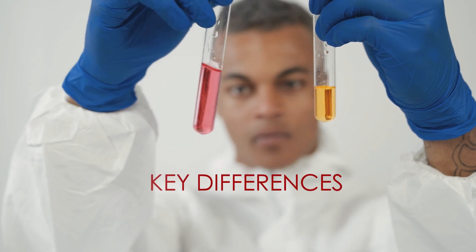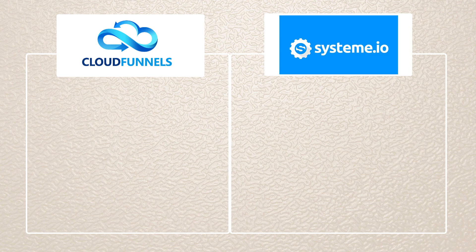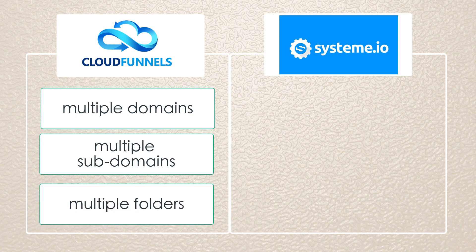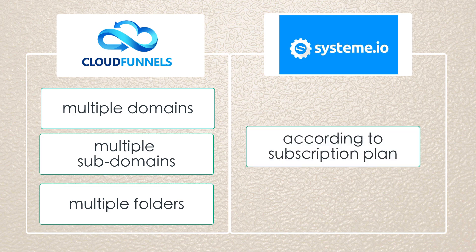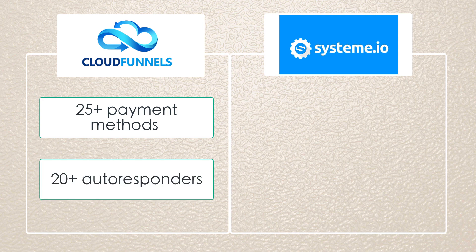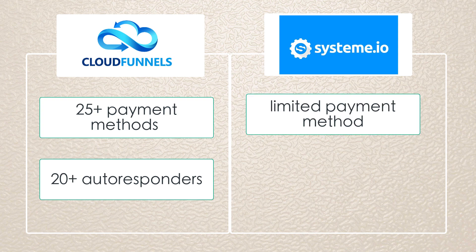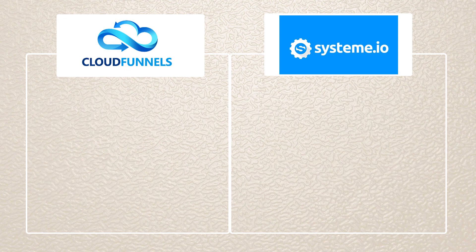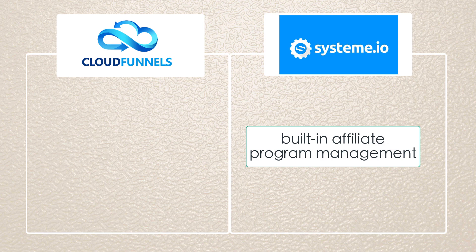Here are some key differences between the two. You can install Cloud Funnels on multiple domains, subdomains, and any folder. Meanwhile, in System.io, you can create unlimited funnels, pages, and email marketing according to your subscription plan. Cloud Funnels has over 25 payment methods and over 20 autoresponders, while System.io has limited payment methods, autoresponders, and integrations. System.io has a built-in affiliate program management.